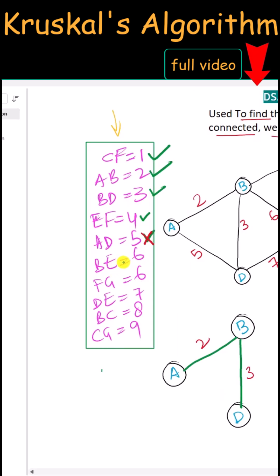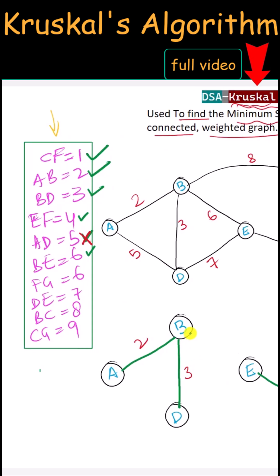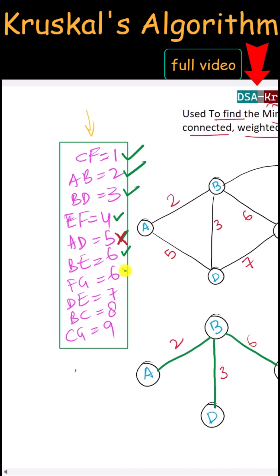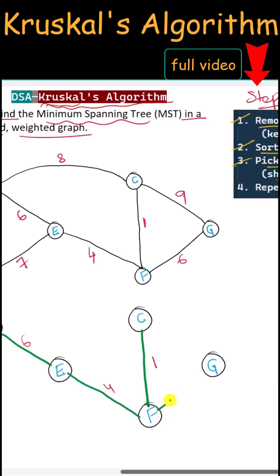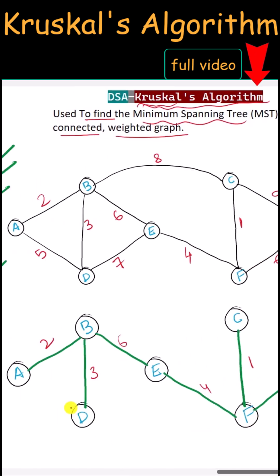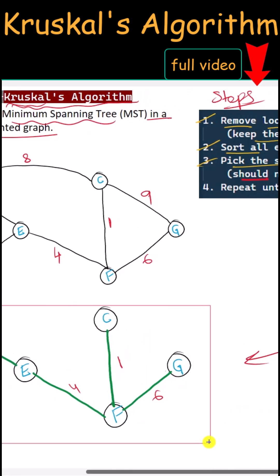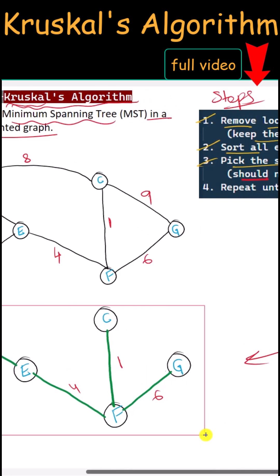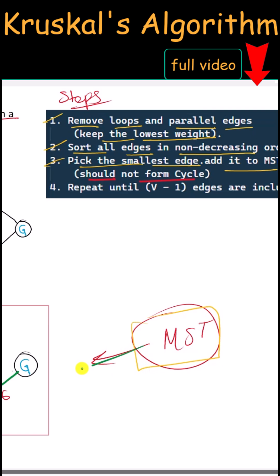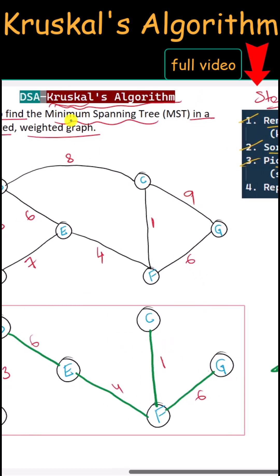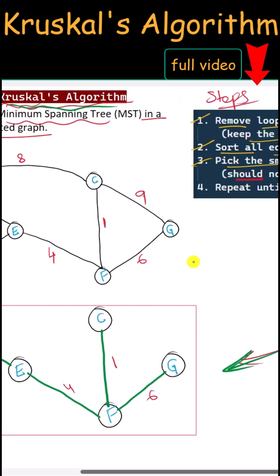Next we have edge BE, so we include BE. Next we have edge FG, so we include FG. Now all the vertices are connected using edges, which means this is our minimum spanning tree. This is the process of Kruskal's algorithm. Thank you.